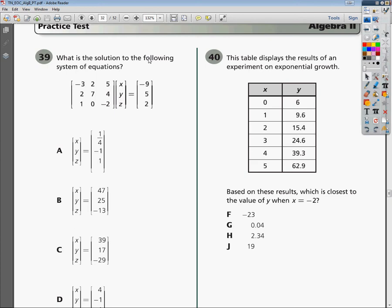The question says, this table displays the results of an experiment on exponential growth. And it gives you the data there. Based on these results, what is the closest value of y when x equals negative 2?